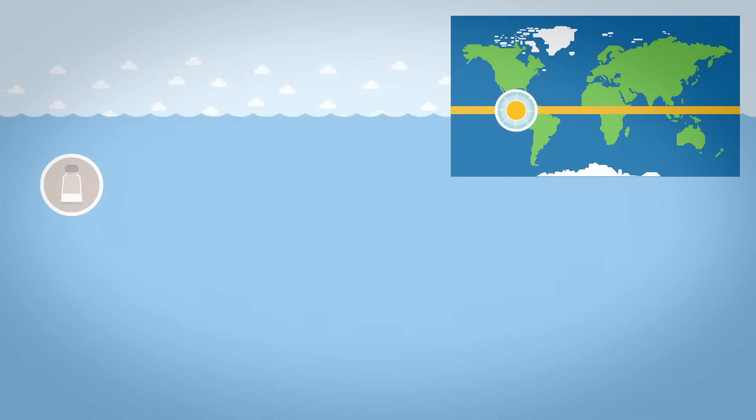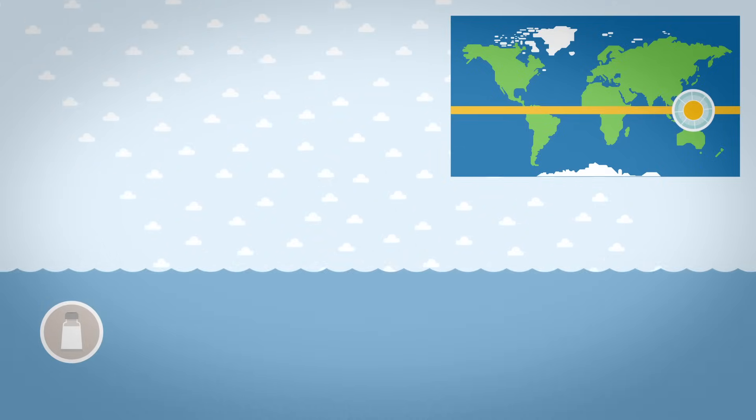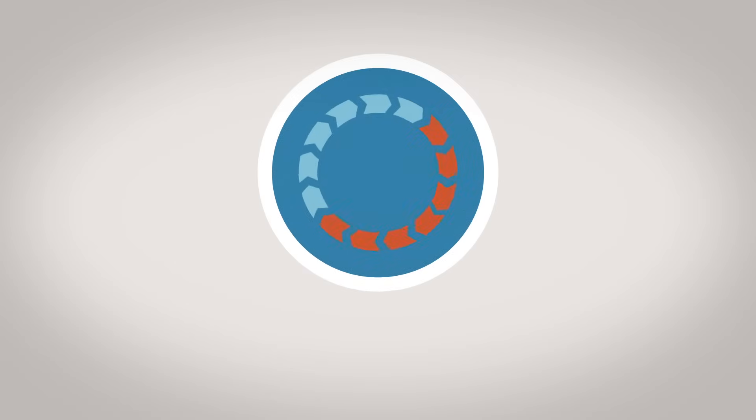At the equator the heat from the Sun is especially strong, resulting in a lot of evaporation and thus a rise in the water's salt content. That is where the Gulf Stream begins.